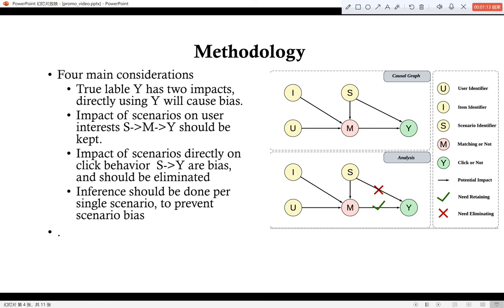According to the causal graph, we have four main considerations. The first is true label Y has two impacts. Directly using Y will cause bias. The second one is impact of scenarios on user interests as to M to Y should be kept.